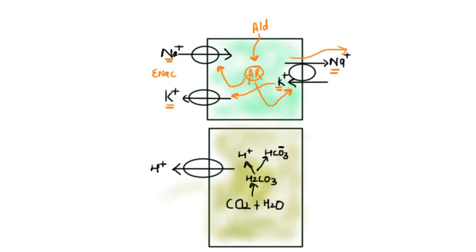As a result of sodium reabsorption, a negative potential is generated in the urinary lumen because the positive cation is moving inside. This negative potential attracts not only potassium but also hydrogen ions from the alpha intercalated cell. So under normal circumstances, aldosterone causes reabsorption of sodium and excretion of potassium and hydrogen ions.